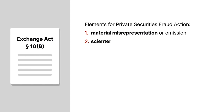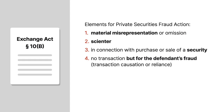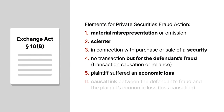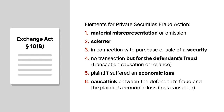Third, the conduct occurred in connection with the purchase or sale of a security. Fourth, the plaintiff wouldn't have entered into the transaction but for the defendant's fraud, known as transaction causation or reliance. Fifth, the plaintiff suffered an economic loss. And sixth, there was a causal link between the defendant's fraud and the plaintiff's economic loss, known as loss causation.